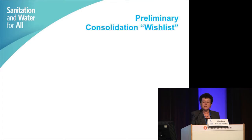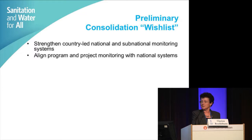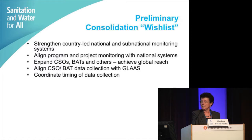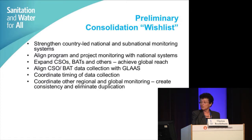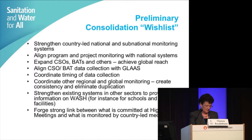To summarize this consolidation wish list: strengthen country-led national and sub-national monitoring systems; align program and project monitoring with national systems; expand the CSOs and bottleneck analysis tools and align them more closely with GLASS; coordinate the timing of data collection; coordinate other regional and global monitoring; create consistency; eliminate duplication; strengthen existing systems in other sectors; and forge a very strong link between what is committed at high-level meetings and what is monitored by country-level mechanisms.